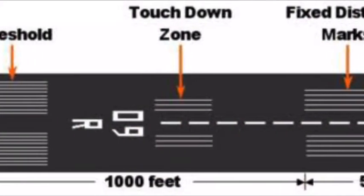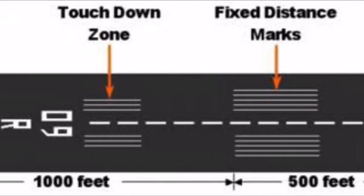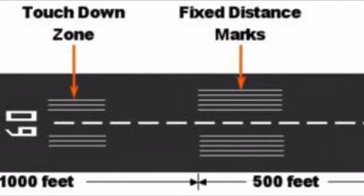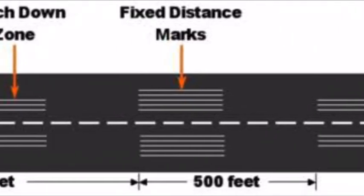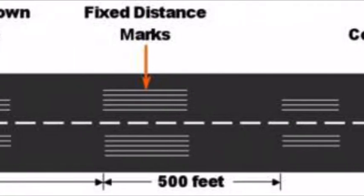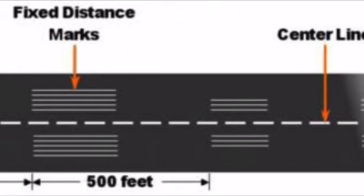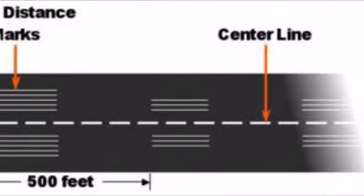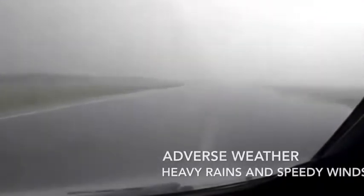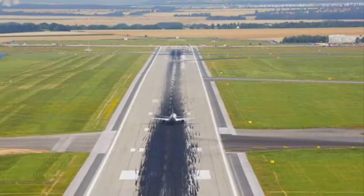When the pilot decided to land on Runway 10, the plane could not touch the touchdown zone marking and landed some meters away from the actual touchdown position. Because the plane did not touch down at the actual touchdown zone, the effective runway length became shorter.